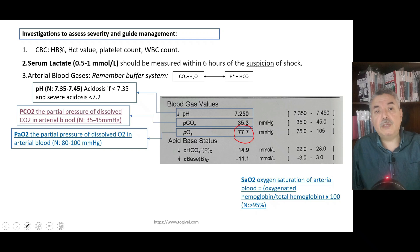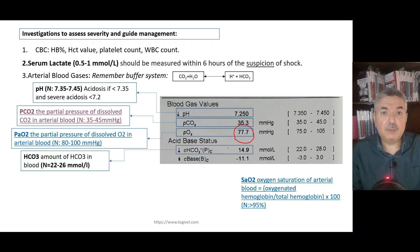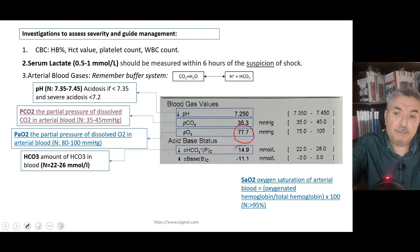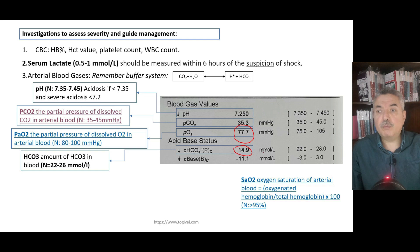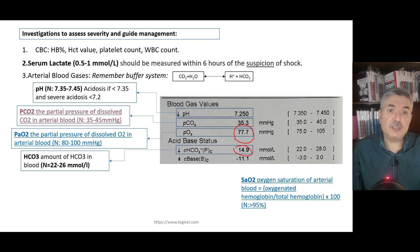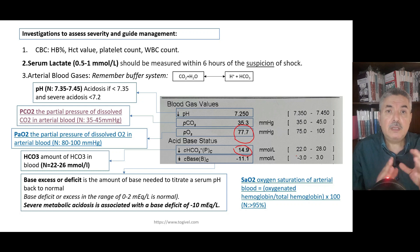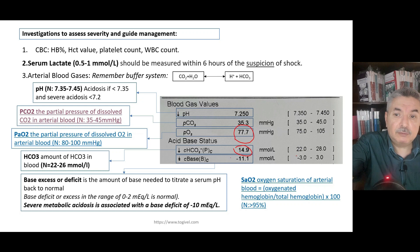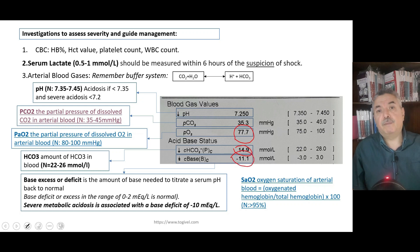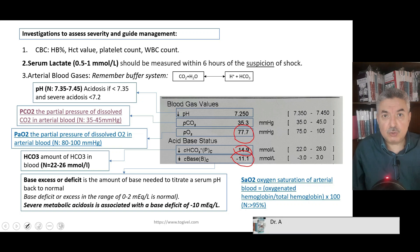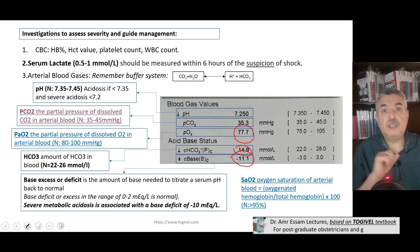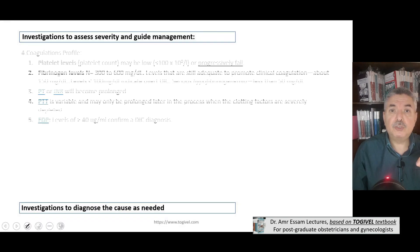On the ABG paper: oxygen pressure of 77.7 mmHg is below the normal of 100 mmHg. Bicarbonate here is 14.9 mmol/L, against a normal of 22, indicating reduced bicarbonate. Base deficit is the amount of buffer needed to titrate pH back to the normal value of 7.35. A base deficit of minus 11 in this case indicates severe metabolic acidosis — severe metabolic acidosis is defined as a base deficit of minus 10 or worse.